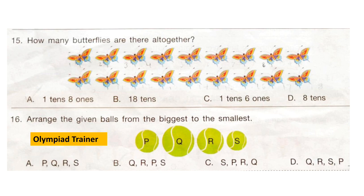Question 15: How many butterflies are there altogether? There are a total of 18 butterflies. Option A is the answer: 1 ten and 8 ones.